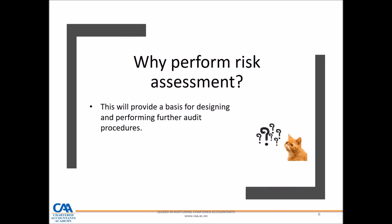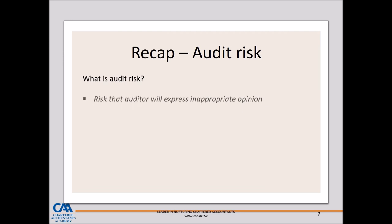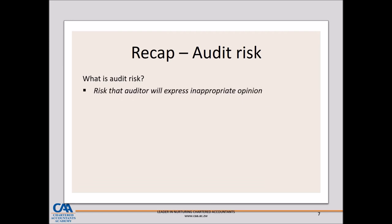Because auditors cannot test 100%, the question is: which areas should we test? The answer is we test those areas which we identify to be high risk areas. So, recap — what is audit risk? From your undergraduate auditing studies, audit risk is the risk that the auditor will express an inappropriate audit opinion. The key drivers are the risk of material misstatement and detection risk.